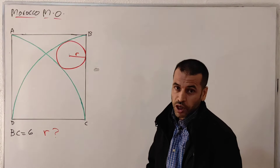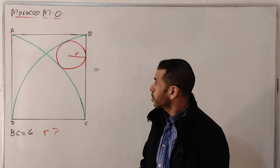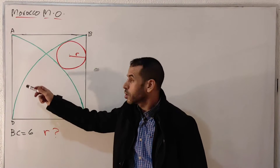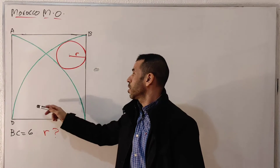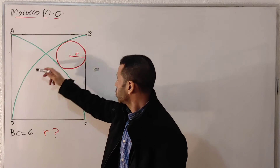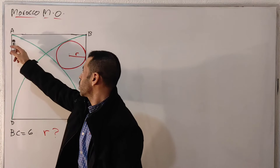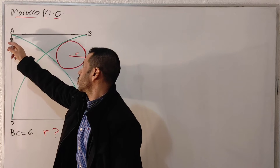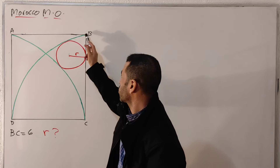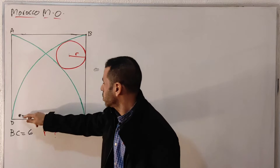In today's video I would like to introduce a very nice geometry problem from a Mathematical Olympiad from Morocco. Here is the following figure: we have ABCD as a square. Within this square we have two quarter circles — one starting from point A, and another quarter circle starting from point B.